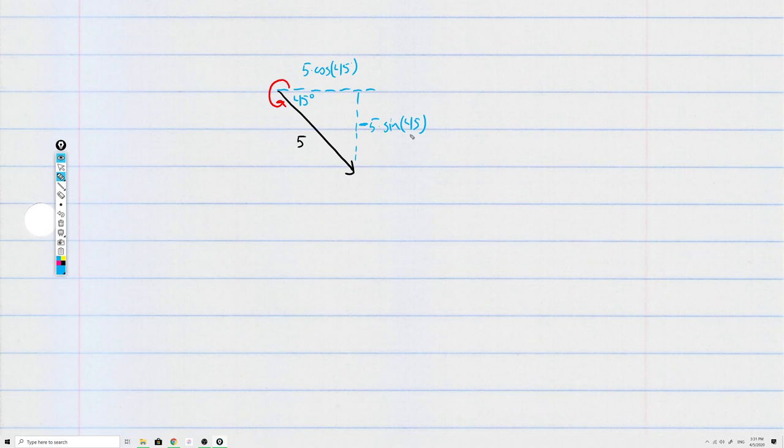So when you're drawing diagrams with vectors, if you want to use nice, simple angles, you are allowed to do that. But again, you do have to be careful and put in the negative signs where they need to be.